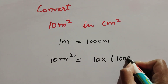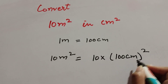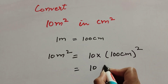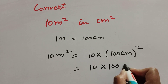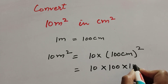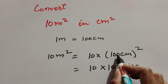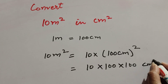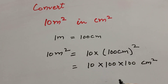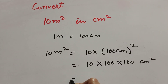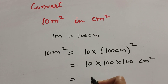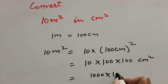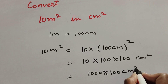It becomes 100 centimeter whole square, so it is equal to 10 x 100 x 100 — because 100 is squared, it is multiplied 2 times — giving us centimeter square. So 10 x 100 equals 1000, and then 1000 x 100 centimeter square.